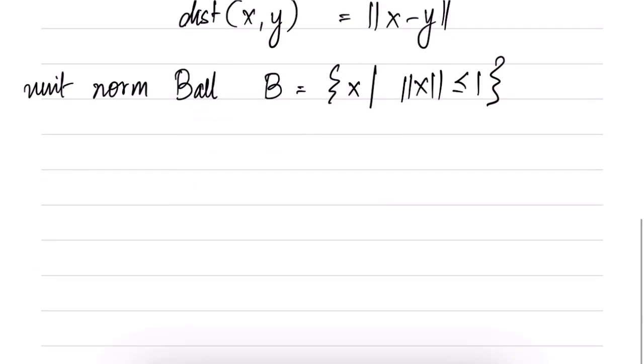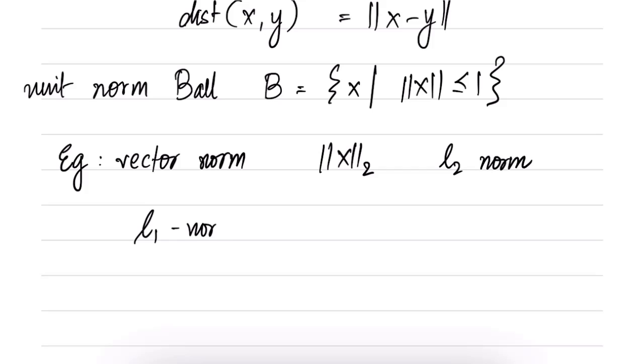Let us look at some examples of vector norms. We have already seen the example of the L2 norm. This was the L2 norm. We said that this is the one which is associated with the inner product because L2 norm squared is the inner product of x with itself. But there is also the L1 norm which is given by summation of i = 1 to n of |x_i|. So sum of absolute values of entries of x, that is the L1 norm.